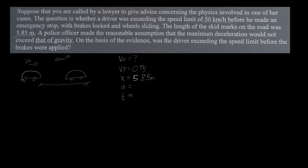What is the acceleration? The police officer made the reasonable assumption that the maximum deceleration would not exceed that of gravity, so we can assume the acceleration is 9.81 meters per second squared. In this case it is negative, because the acceleration is directed to the left, and we assume rightward is positive so that we have a positive initial velocity. As for time — how long the car was braking — that we do not know.